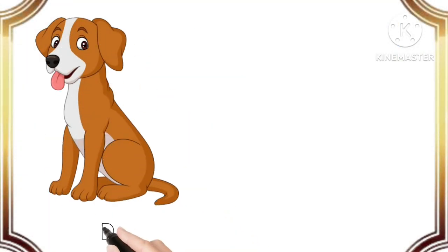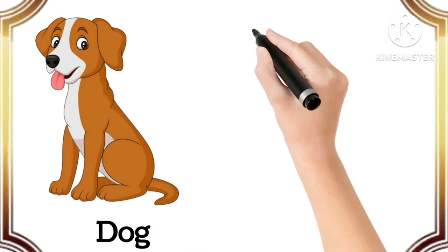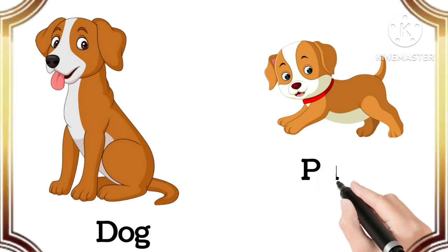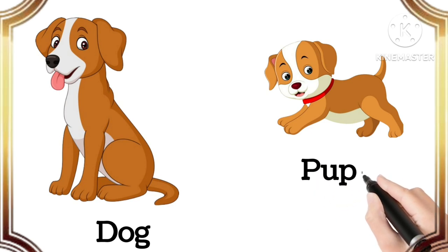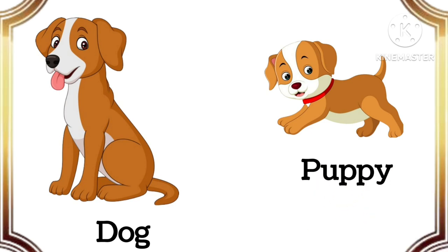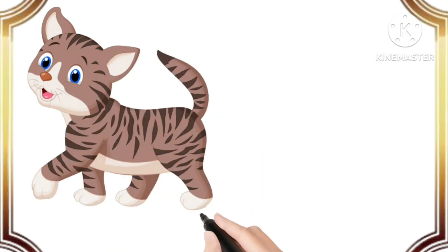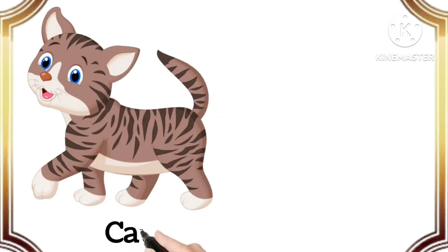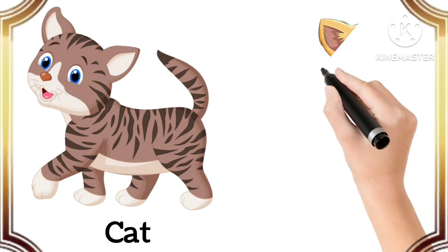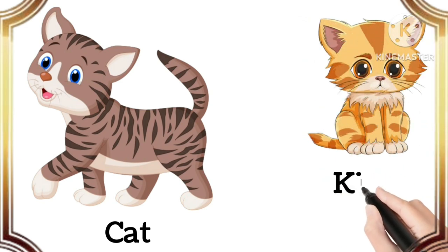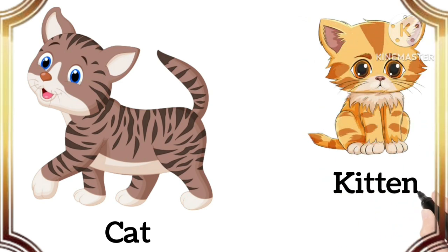Dog. The baby of dog is puppy. Puppy. Cat. The baby of cat is kitten. Kitten.